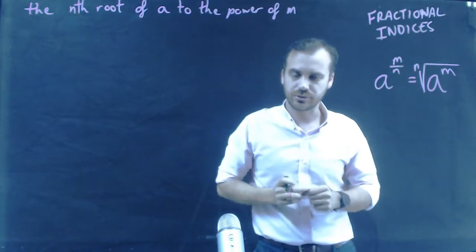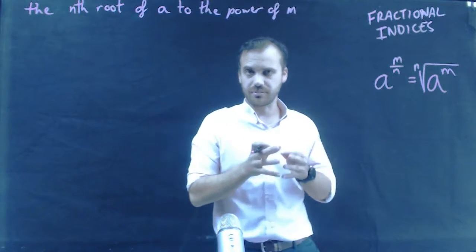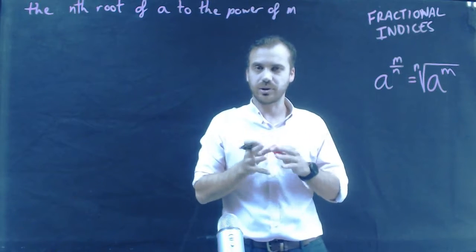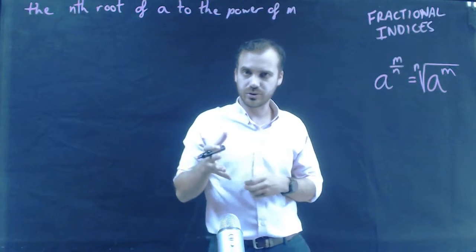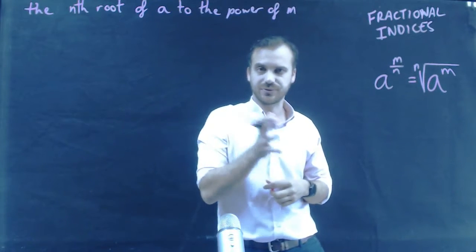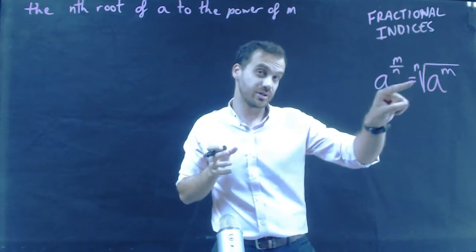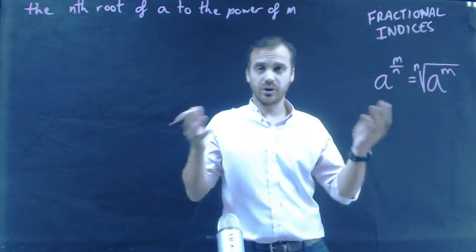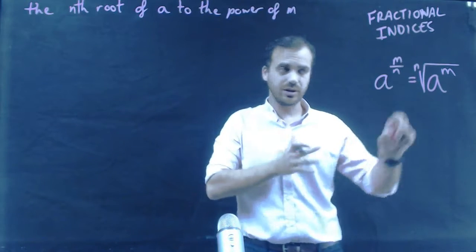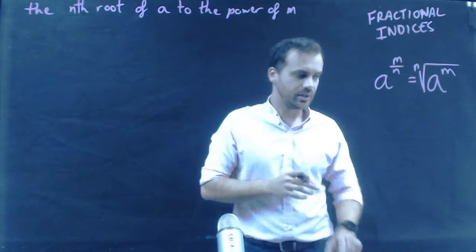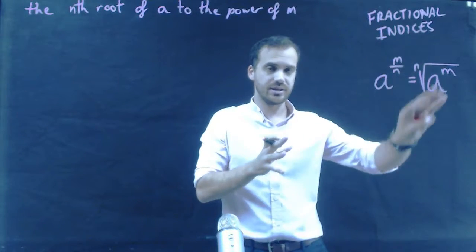The nth root. You've probably dealt with square roots before — that's a number multiplied by itself to give whatever's inside. You can have cube roots as well, which is a number multiplied by itself three times, or the fourth root, fifth root, seventh, or ninth root. The ninth root would be a number multiplied by itself nine times to give that value. So that's fractional indices and how you set them up.